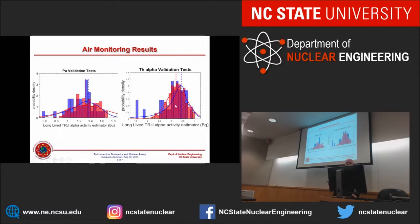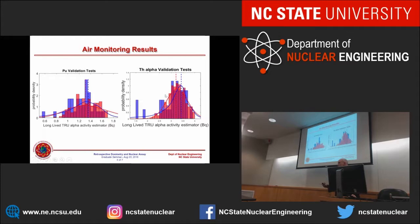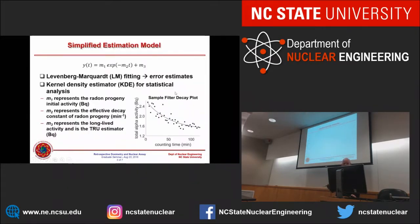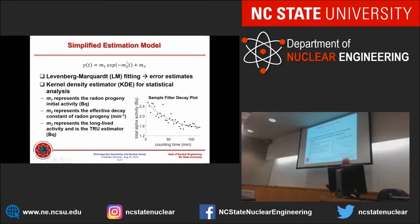The blue distribution is when you actually had activity on the filter; the red is when you had no activity. You're comparing how well the method was able to predict the actual values in becquerels.